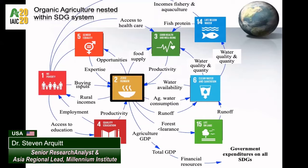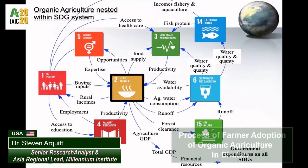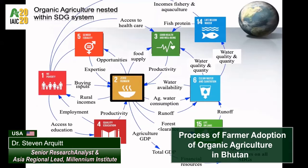Simulating such a complex system requires a thoroughly integrated model. The diagram shows numerous causal connections and feedback loops emanating from SDG 2, which contains the sustainable agriculture sector, to the other SDGs, and in turn being influenced by changes in the other SDG sectors.